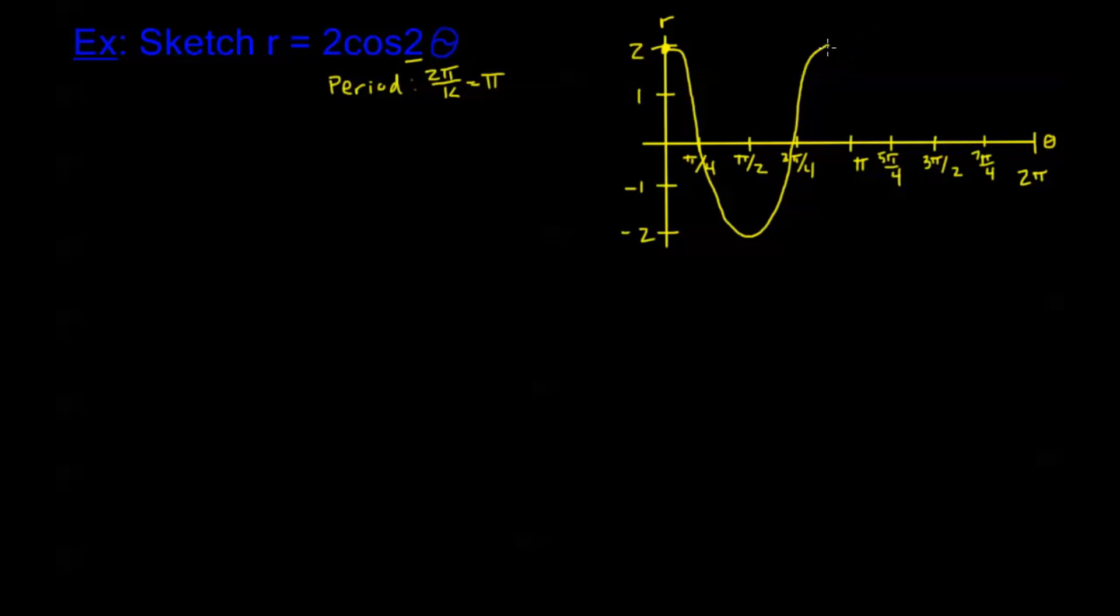Now I need to go ahead and finish this out and draw a second period, so we can use this to do our polar graph. Try to be careful, so this is a pretty accurate one. We want to be able to use this well. So here's my graph of the rectangular equation, r equals 2 cosine 2 theta.